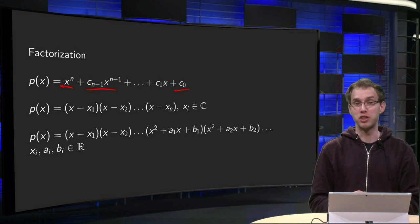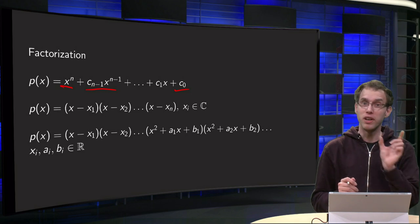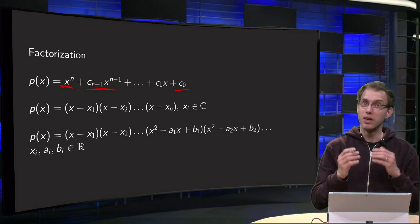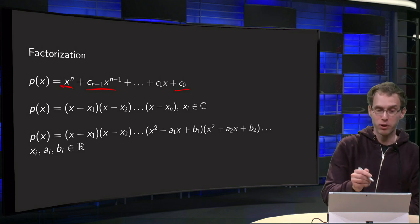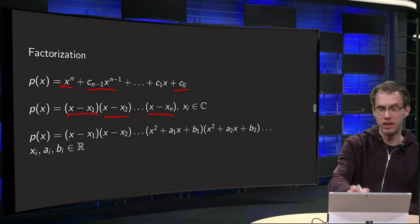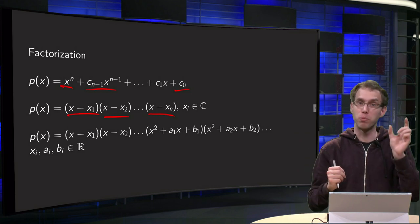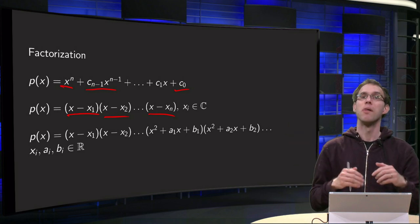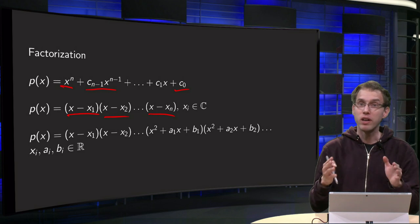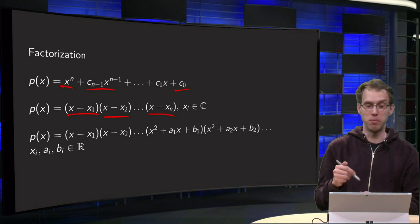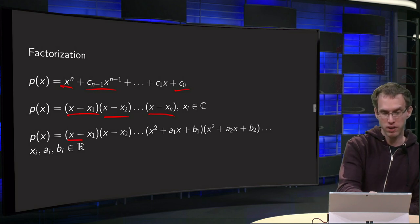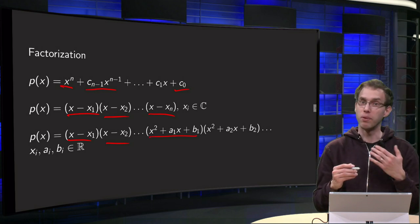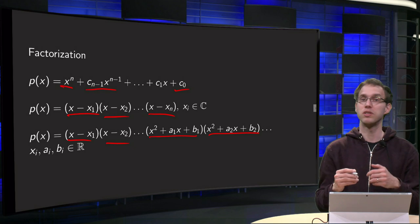What do we mean by factorization? We want to split it up into small linear factors. If we can have our numbers in ℂ, then we can split any polynomial into linear factors only. So we can rewrite our big polynomial as a product of terms (x − x₁)(x − x₂)(x − x₃) up till (x − xₙ). If we don't allow complex numbers and can only use real numbers, then we can also split up our polynomial, but we may also encounter quadratic terms of the form x² + a₁x + b₁, x² + a₂x + b₂, etc.